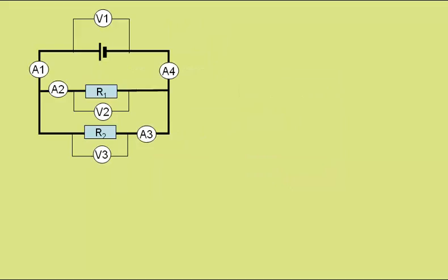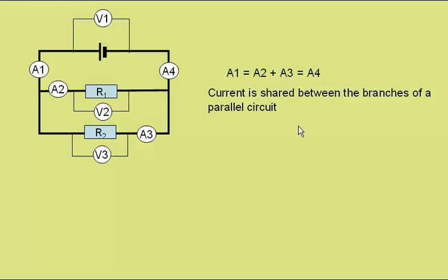Applying Kirchhoff's first law to this simple parallel circuit, the current coming down here through ammeter 1 must either go through ammeter 2, or down here and through ammeter 3, joining up again to go through ammeter 4. So ammeter 1 will have the same reading as ammeter 2 plus ammeter 3, and that will be the same as ammeter 4. From Kirchhoff's first law, we get that the current is shared between the branches of a parallel circuit.